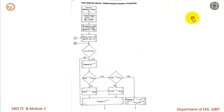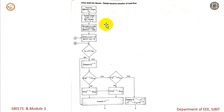Here we know the algorithm for the Gauss-Seidel iterative solution method. The first step in this method is to form the Y-bus matrix, that is the admittance matrix.